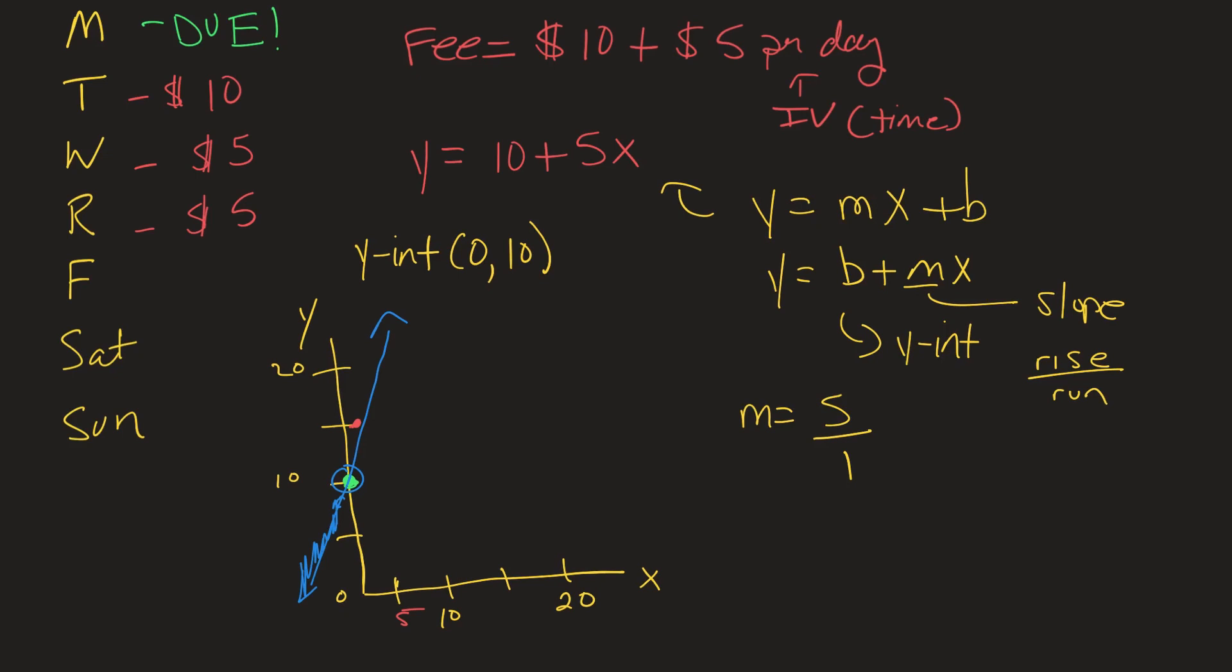So we could go like after five days, what would the fee be? Well it would be y equals $10 plus $5 times five days. So y would equal 10 plus 25, y would equal 35.